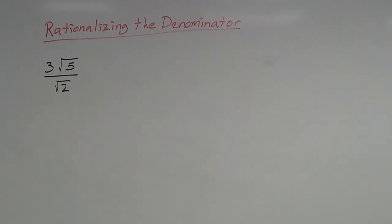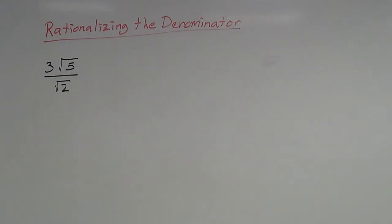This video is about rationalizing the denominator. This is a process that we use to simplify radicals. Sometimes it can be a little bit of a difficult process just because you have to remember one step to do, and then you have to combine a lot of terms and numbers together. But for the most part, it's a pretty straightforward process.